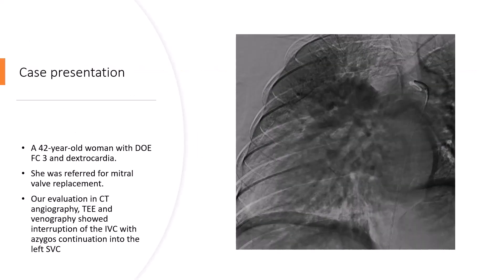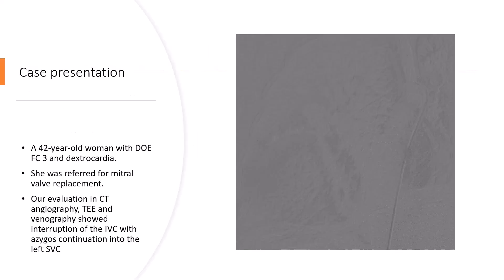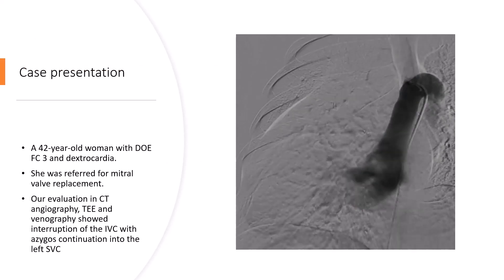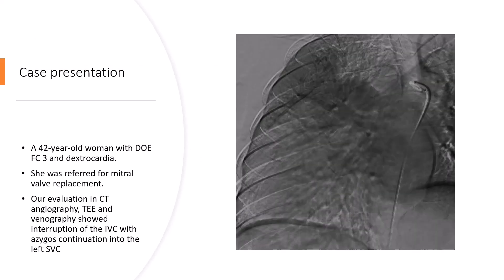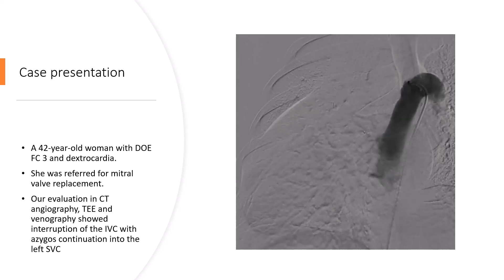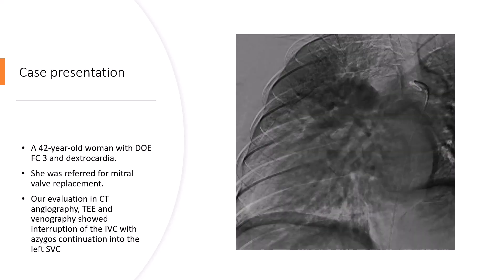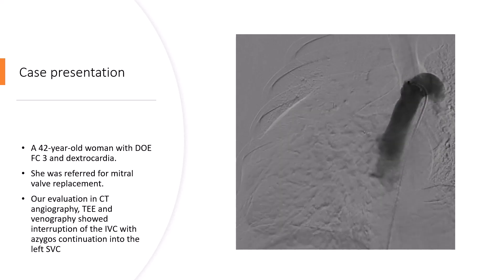A 42-year-old woman with dyspnea on exertion and dextrocardia was referred for mitral valve replacement to our center. Our evaluation with CT angiography, transesophageal echocardiography, and venography showed interruption of the IVC with azygos continuation into the left SVC.